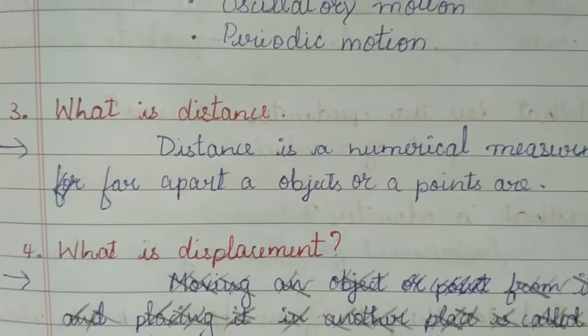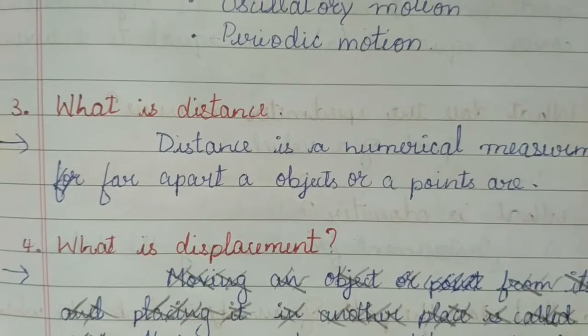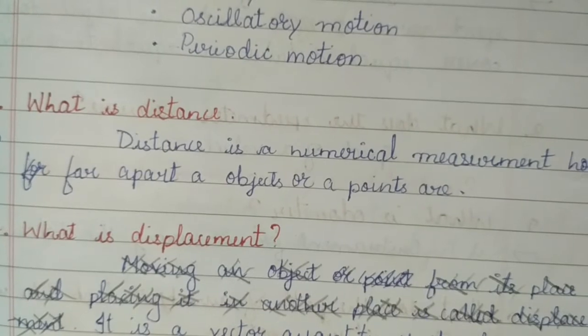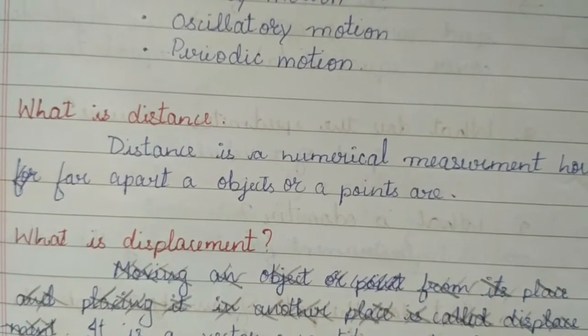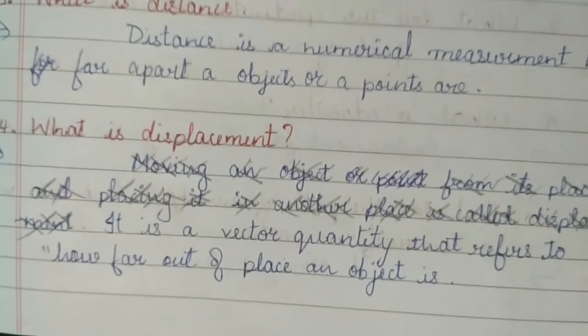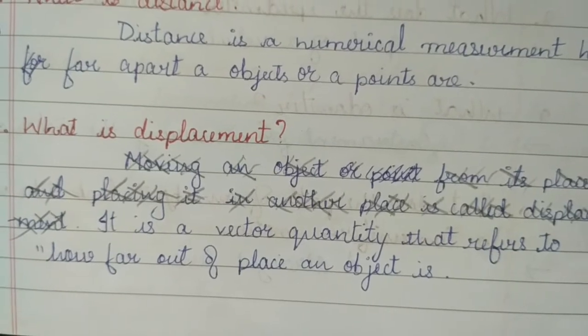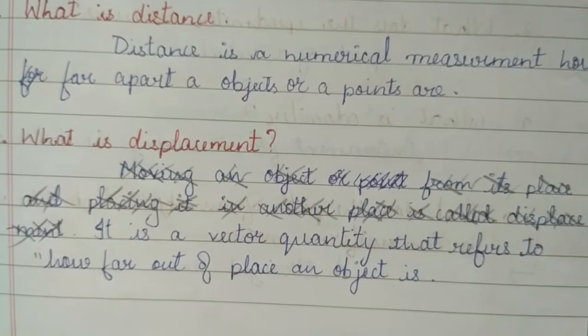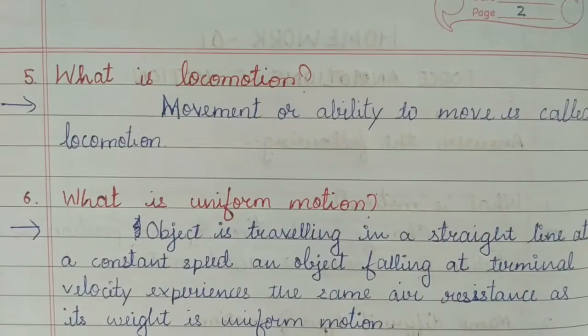What is distance? Answer: distance is a numerical measurement of how far apart objects or points are. What is displacement? Answer: displacement is a vector quantity that refers to how far out of place an object is.